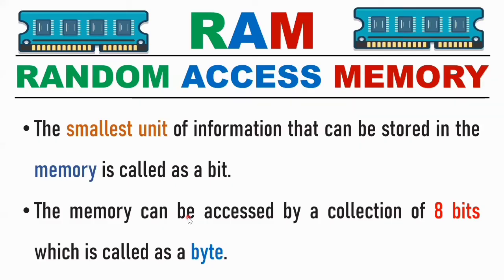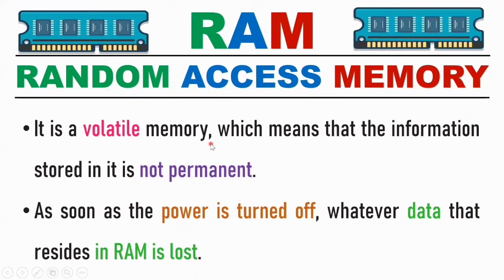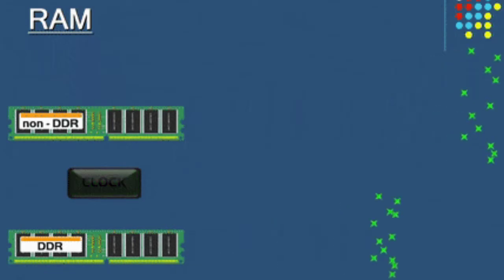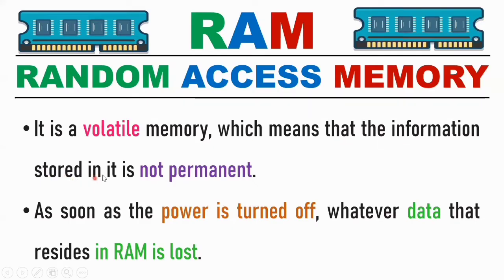RAM is a volatile memory. When the system is switched off and shut down, all the data and instructions are erased from RAM. This means the information stored in it is not permanent — as soon as the power is turned off, whatever data resides in RAM is lost.